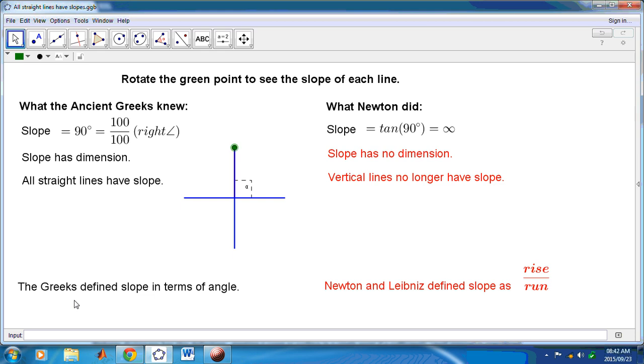But they used to have slopes using the ancient Greek method. In other words, the Greeks defined slope in terms of angle. And Newton and Leibniz defined slope as rise over run. By so doing, the vertical lines no longer have slope using tan of an angle or tan of theta.